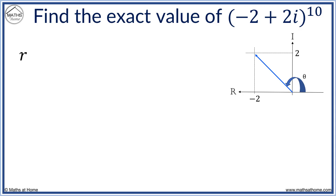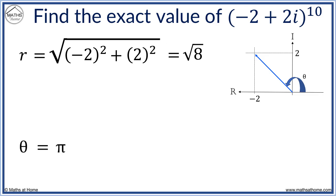r equals the square root of minus 2 squared plus 2 squared, which equals root 8. The argument, theta equals pi minus arc tan of 2 over 2. This equals 3 pi over 4.